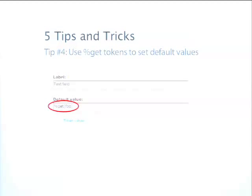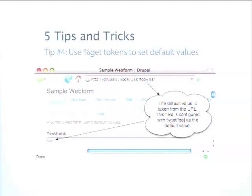Also related to tokens: the GET token is a really handy token that pulls things out of the URL and sets them as the value of a field. Using the GET token with a hidden field is a great idea — you can construct URLs like 'referral code is this' or 'first name is this,' and pull that value from the URL as the default value of a field. This lets you track all kinds of things through the URL, which will be included in the submission passed to administrators.